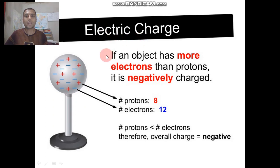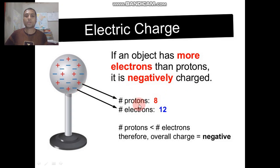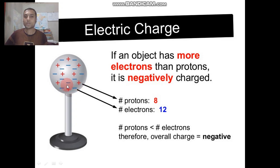Electric charge: if an object has more electrons than protons, it is negatively charged. For example, in this figure there are 8 protons and 12 electrons. The number of protons is less than the number of electrons, therefore the overall charge is negative — this material is negatively charged.